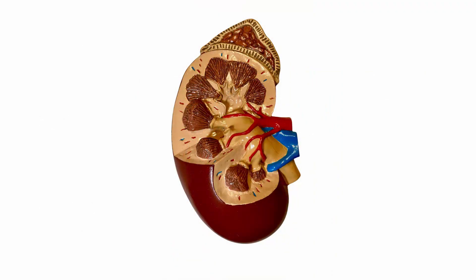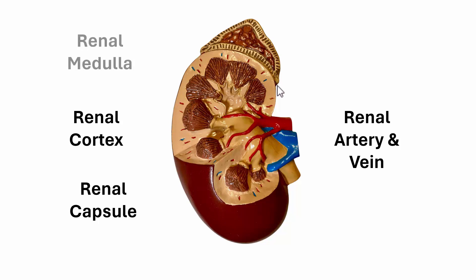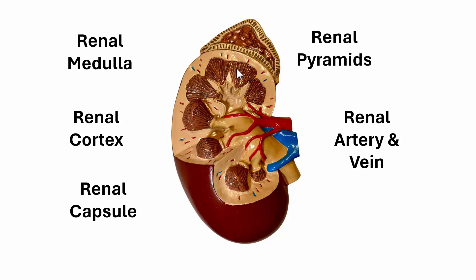In this more simplified kidney model, we can see the renal artery and the renal vein. The brown here is the renal capsule. The renal cortex is here — cortex means bark, like the bark of a tree. Next, we have the renal medulla, and these renal pyramids are found within the renal medulla.